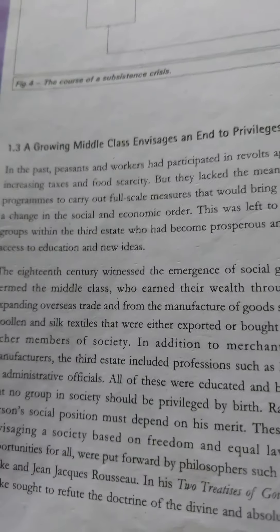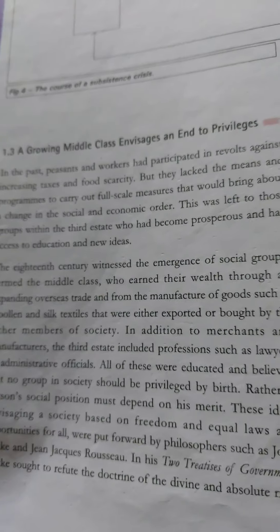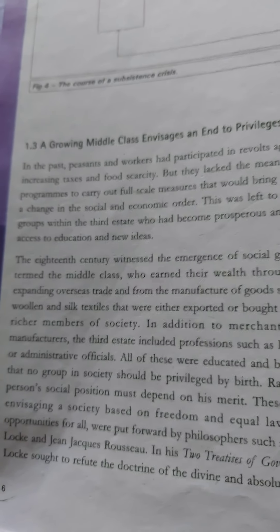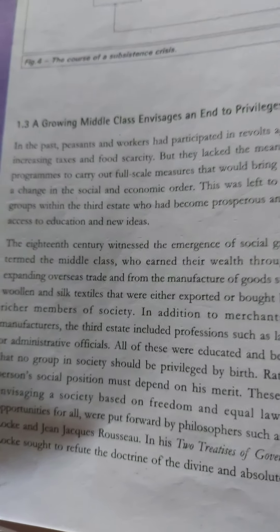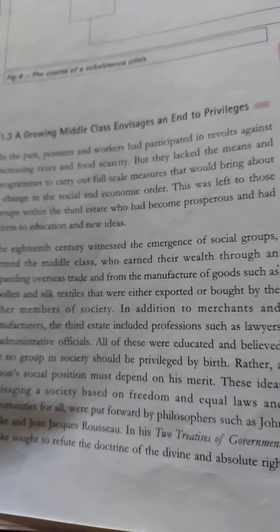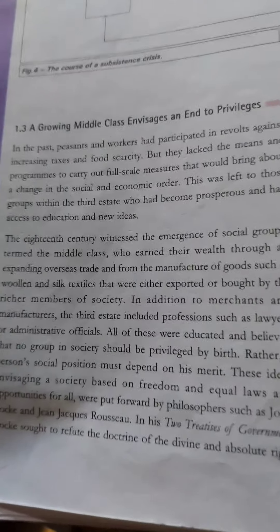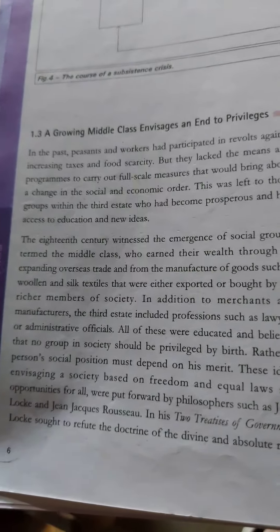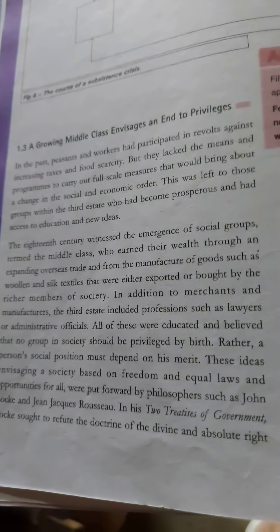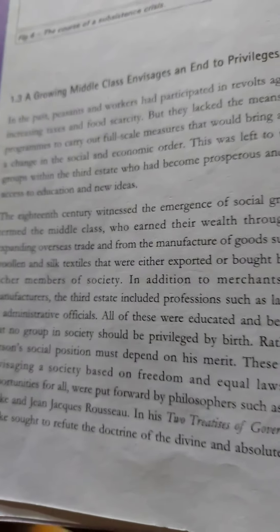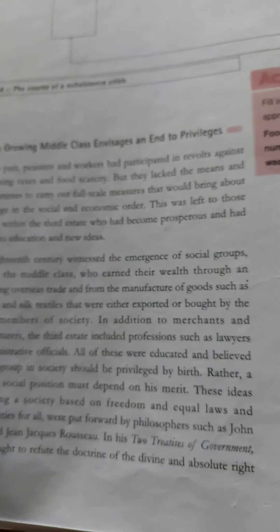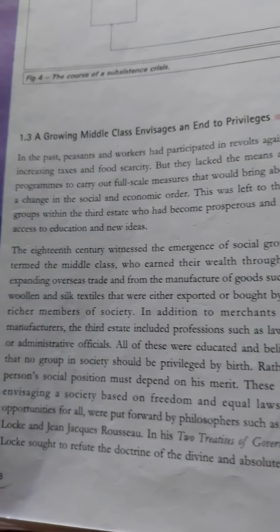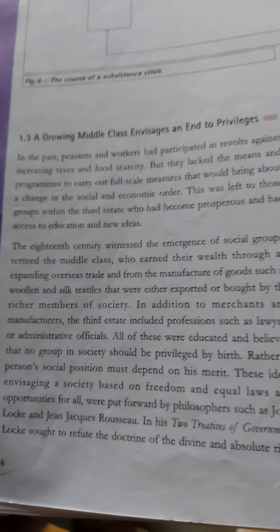In the 18th century, new social groups emerged. They were part of the middle class — they had earned wealth through overseas trade, manufactured goods like wool and silk, and exported these to richer members of society. Merchants, manufacturers, lawyers, and administrative officials within the Third Estate were educated and believed that no group should be privileged by birth; rather, a person's social position must depend on merit.